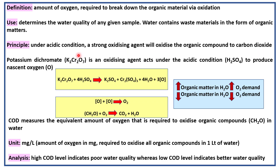In this test, potassium dichromate or K2Cr2O7 is used as an oxidizing agent. It acts under acidic conditions — that is, H2SO4 — to produce nascent oxygen.